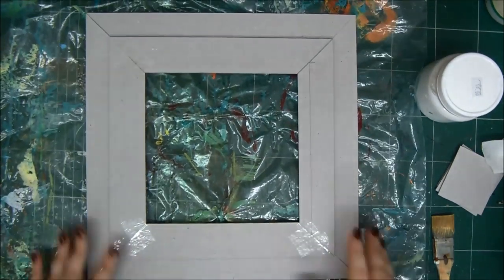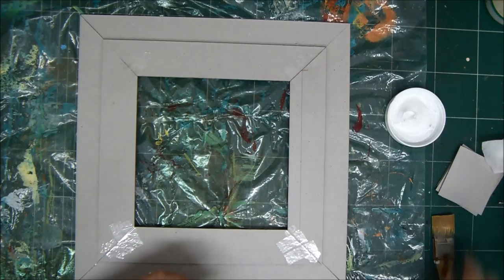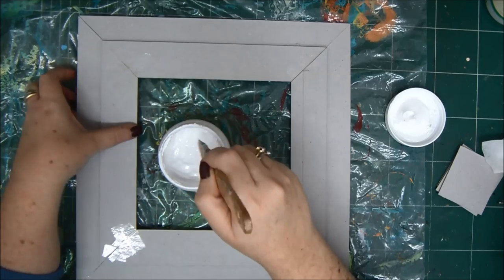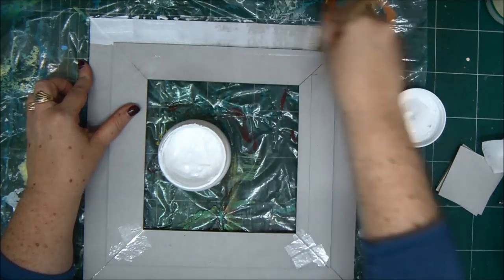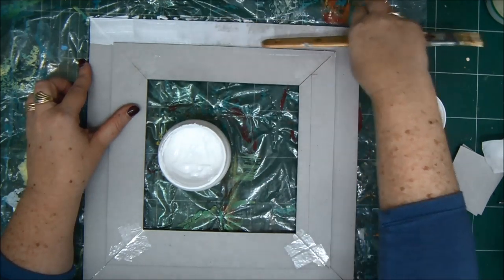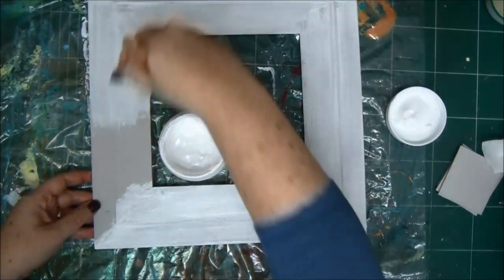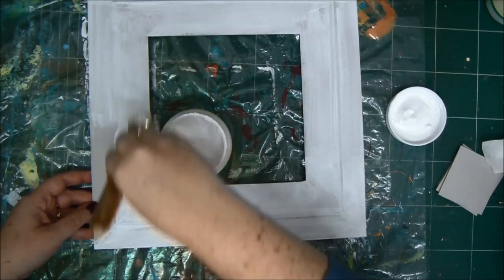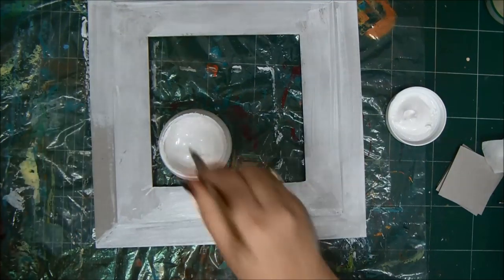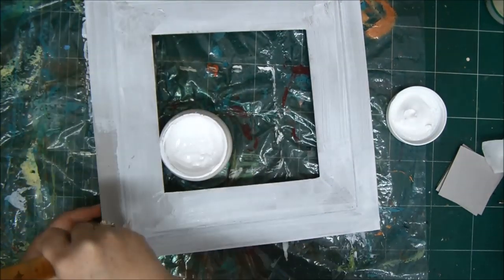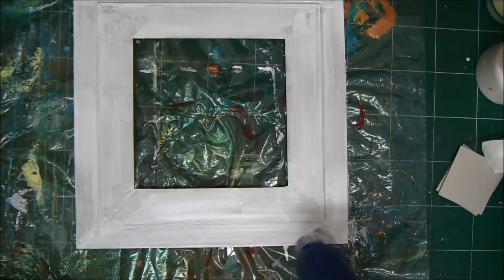After you glued everything together and it's nice and strong, now we're going to cover it with the first coat of gesso. This will prime it for everything that's going to come much later. Just cover everything with gesso. Make sure you go on all the sides so everything will be completely covered and primed to continue. And, of course, you will have to use your heat tool to dry everything up.